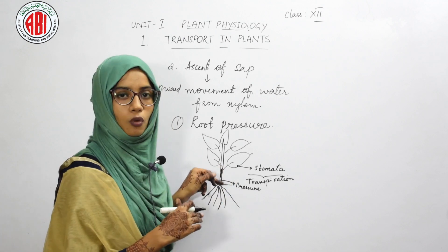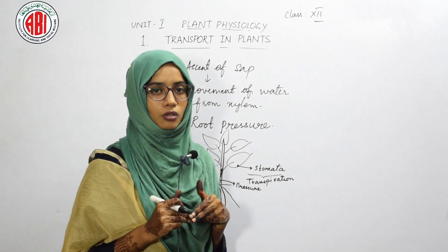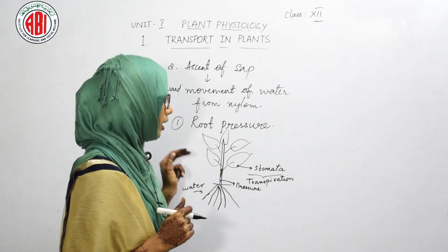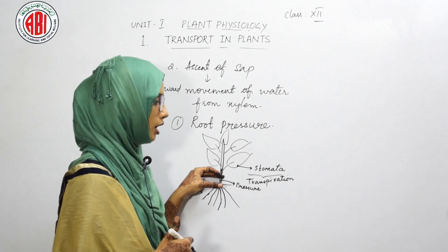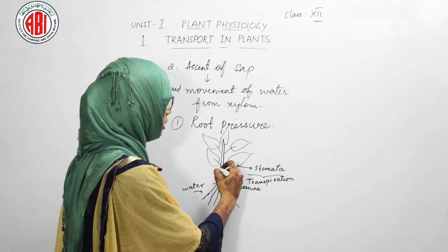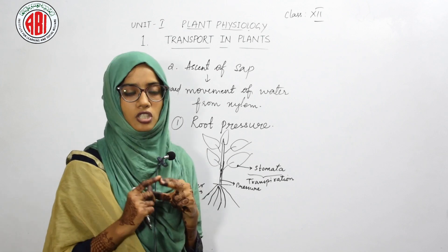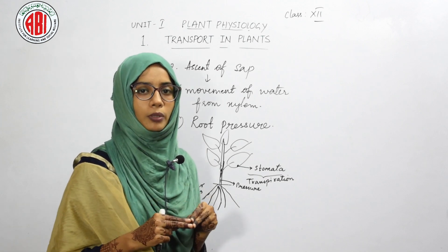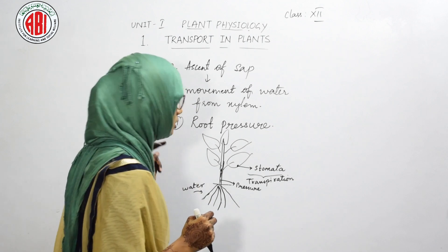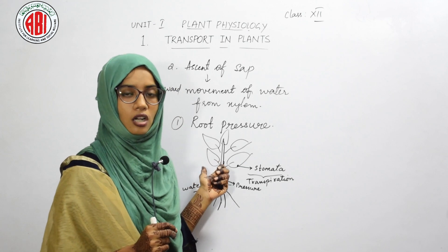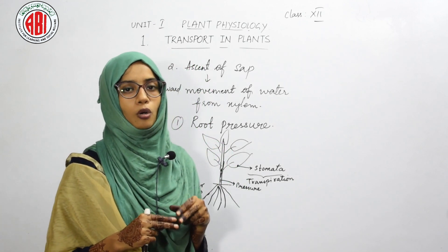As water movement is continuous inside the plant body, xylem vessels of the root create some pressure that helps water move upward. The pressure created by the xylem vessels of the root is called root pressure. When root pressure is created due to absorption of water through root hairs, a column or channel is built in the stem and other parts of the plant body, allowing water to enter the various cells.